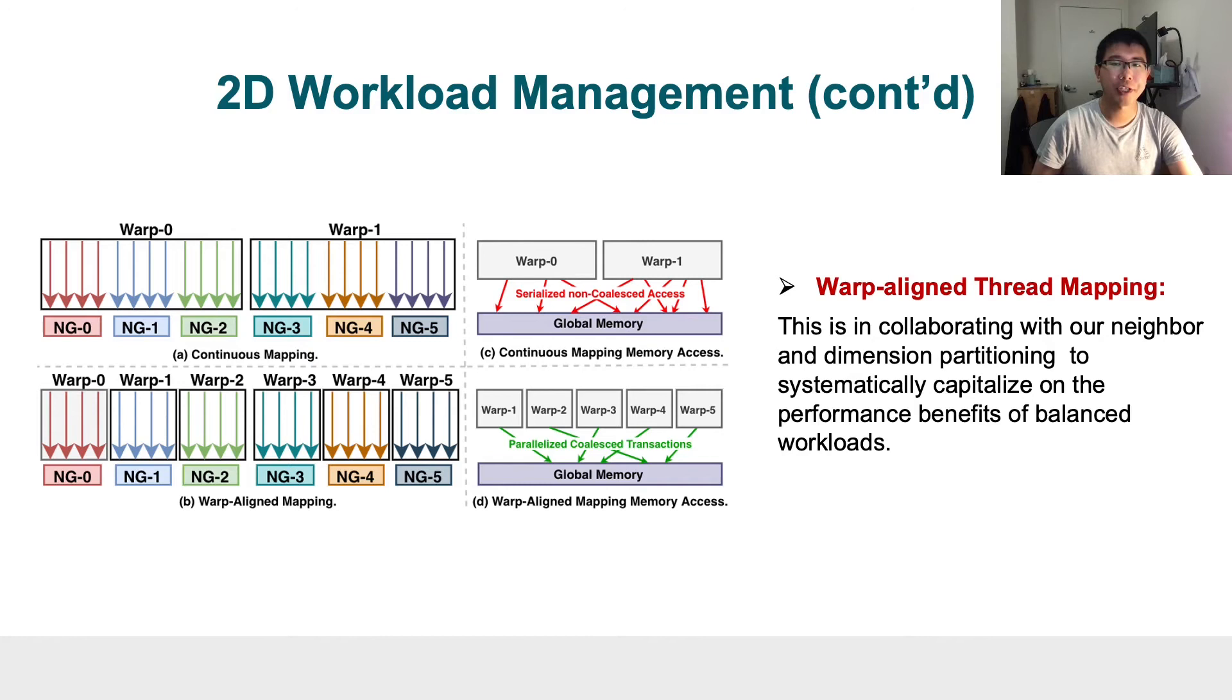Our third design strategy is warp-aligned thread mapping. This is in collaboration with our neighbor and dimension partitioning to systematically capitalize on the performance benefits of balanced workloads. From the left side, we can see that our design allocates individual thread warps to handle each neighbor partition such that warp-level thread divergence can largely be avoided. In the middle, we also notice that warp-aligned thread mapping can increase memory access parallelism, where memory access requests from different warps can be processed concurrently without interference with each other.